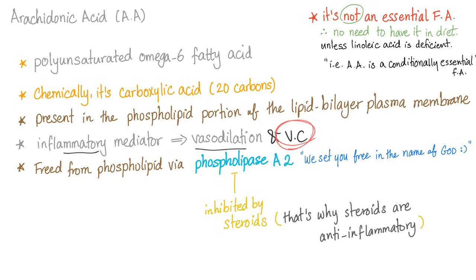Arachidonic acid is not an essential fatty acid, except when linoleic acid is deficient. Essential fatty acid means you have to eat it in the diet because your body doesn't make it. So normally, arachidonic acid is not that. However, when linoleic acid — the parent of arachidonic acid — is deficient, arachidonic acid becomes essential. We call it conditionally essential or semi-essential fatty acid.